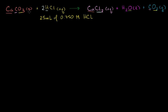Now let's figure out what mass of calcium carbonate we need to react completely with 25 milliliters of 0.75 molar hydrochloric acid solution. This problem is different from others because I haven't given you the mass or the moles of hydrochloric acid — I've given you the amount of solution and the concentration. So we'll use that information to find the moles of hydrochloric acid. Then, for every 2 moles of HCl, we need 1 mole of calcium carbonate, and we'll convert that to mass.